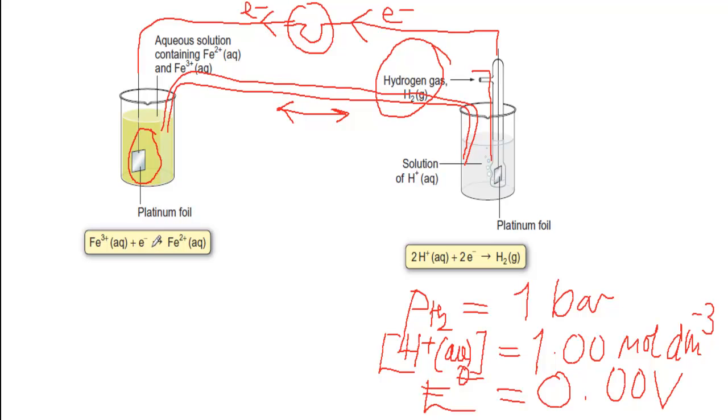So when current is drawn from this cell, the reaction actually goes that way, and in this case the reaction goes the other way so that electrons are released which flow through the wire and reduce the iron.